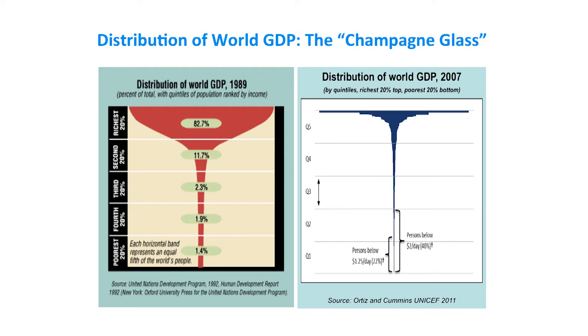Looking at the global analysis, the bottom 20% actually represents extreme poverty — that would be the $1.25 a day level in Quintile 1. And Quintile 2 is the poverty rate at $2 a day adjusted. This shows the extent of the bank's mission.